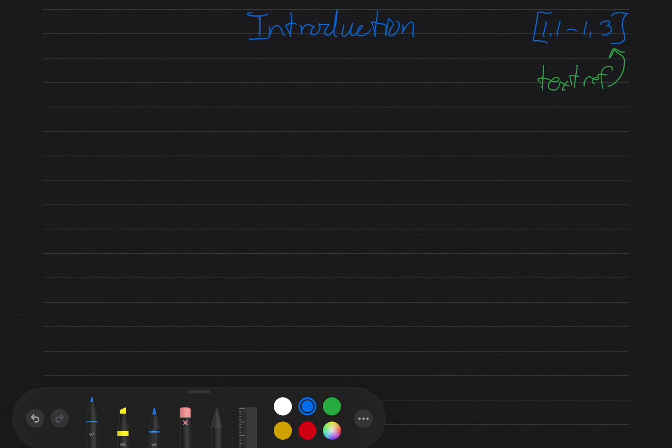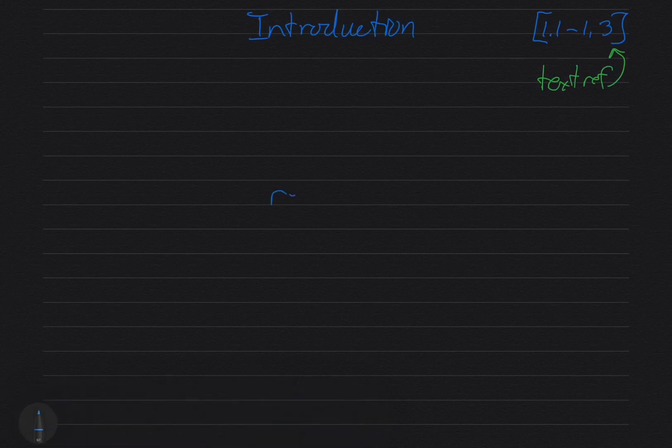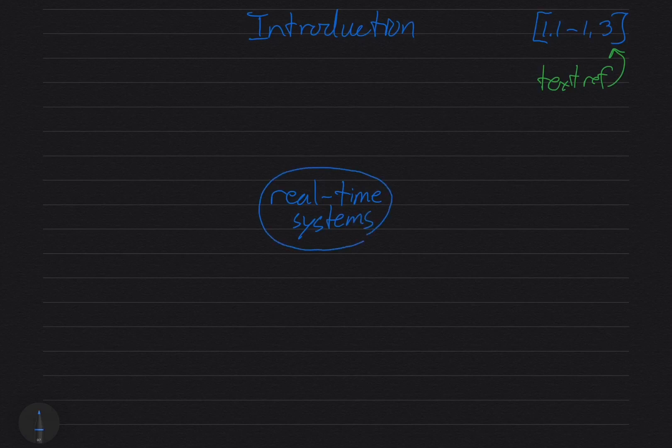What I'm going to start off with here is a conceptual model of real-time systems and embedded systems. Technically you could say this is a Venn diagram, although it's pretty simple. In the center we're going to have real-time systems. I'll try to make something that looks like a circle here.